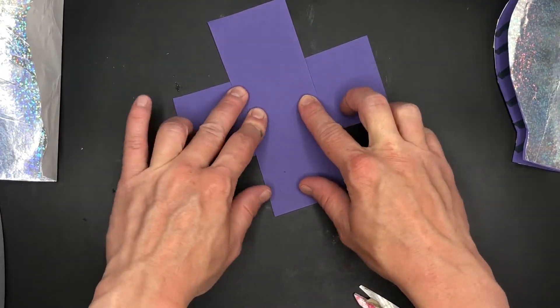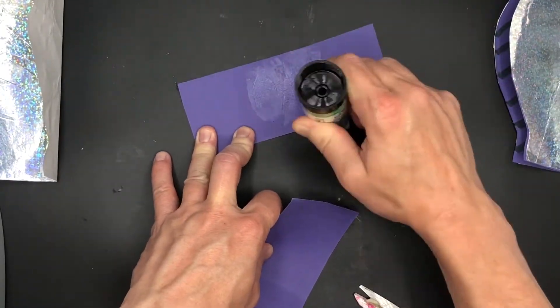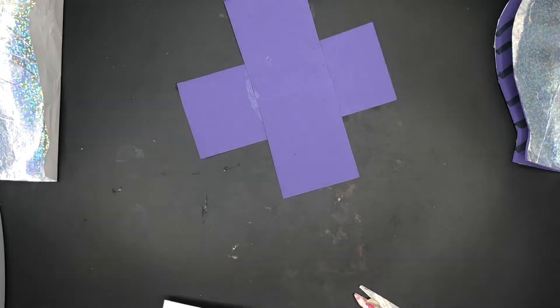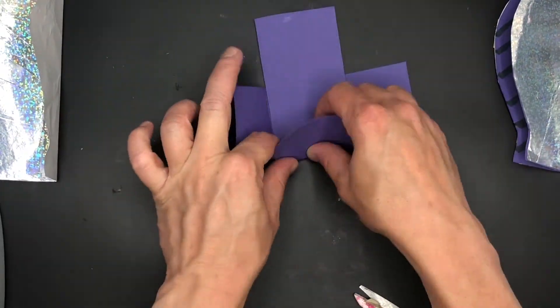So popping a bit of glue in the middle of one of the strips I can lay the other one over the top. Then I'm going to fold those edges up to create a box shape.